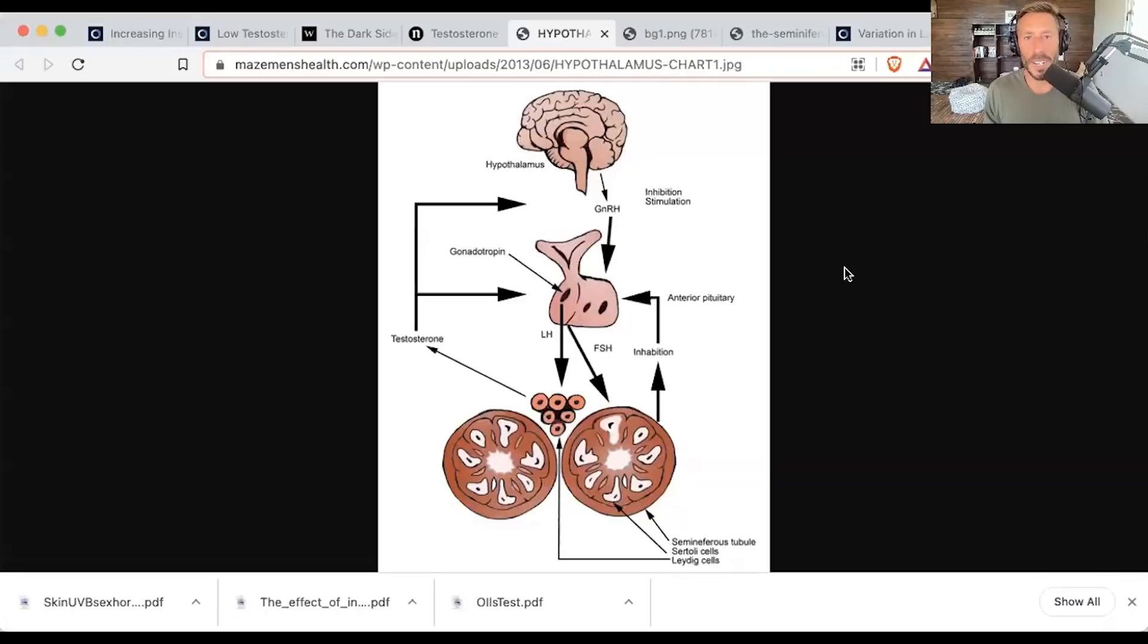So before we dive into a number of these causes and papers that I have to support my assertion that these causes are relevant for low testosterone, I want to talk about the endocrine axis for this hormone. So if you're watching this on YouTube, you will see this graphic. If you are not, then I will try to explain it to you verbally. So you have in the brain, a region of the brain called the hypothalamus, which produces a substance called GnRH.